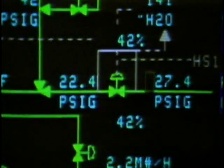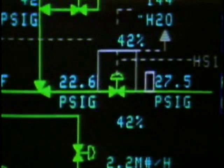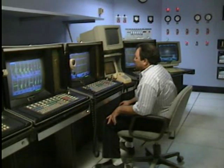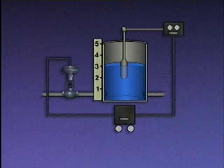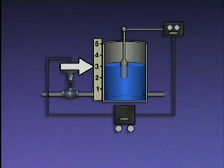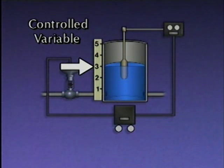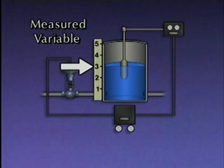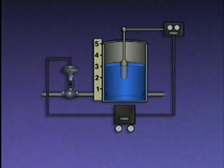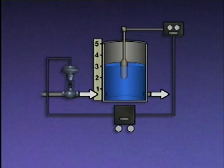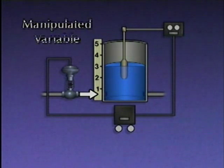Automatic control is basically a form of control that's performed with little or no human intervention. To get a better understanding of how an automatic control system works, we'll use this simplified illustration of a system that's used to control the level of water in a tank. Since the level of the water is what's maintained at a desired value, it can be thought of as the controlled variable in the system. It can also be thought of as the measured variable, because the control system uses it as a basis for making operating changes. The level of the water will remain constant as long as the flow of water into the tank equals the flow of water out of the tank. In this system, the water level is controlled by regulating the flow of water into the tank. For that reason, the flow of water into the tank is called the manipulated variable.